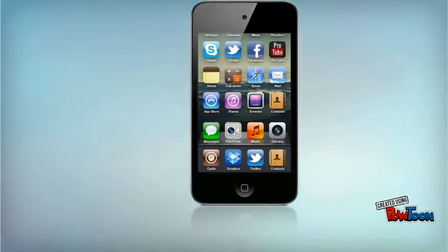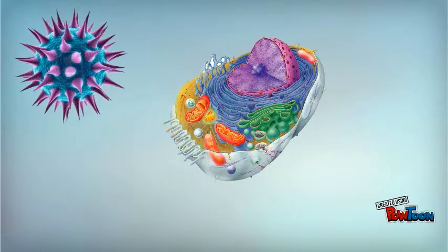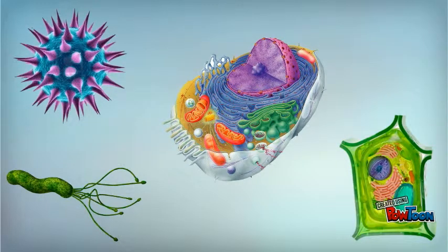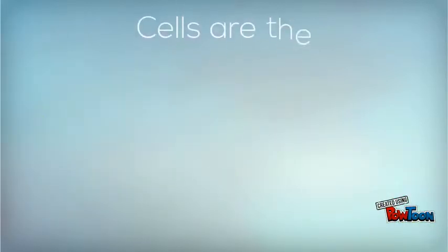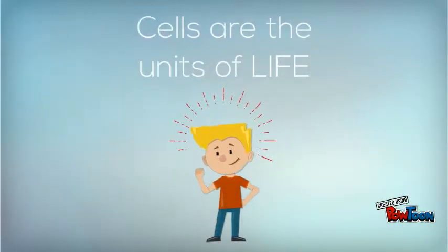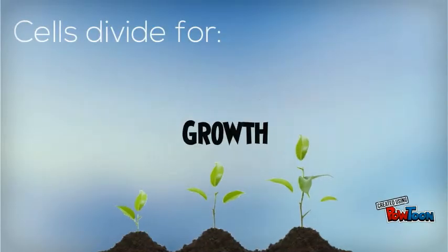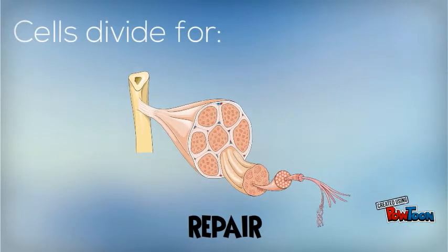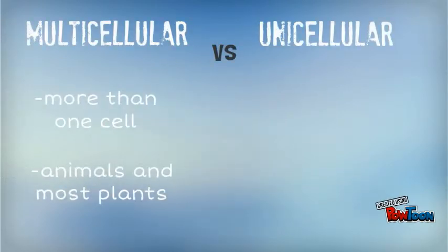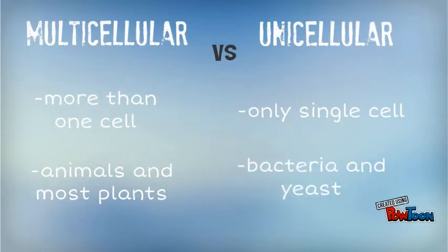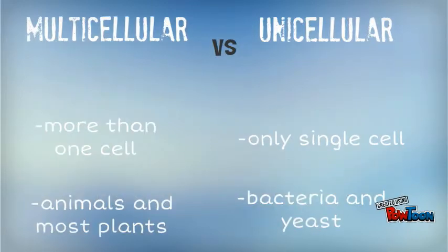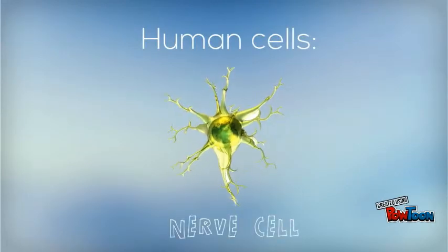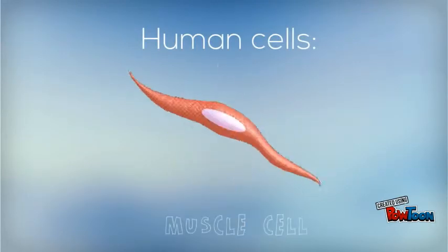Not this kind of cell, but more like this cell, this one, and the others. All living organisms are made up of cells. They are the basic building blocks of life. The cells divide so an organism can grow and repair areas of damage. Organisms made up of more than one cell are described as multicellular. Animals and most species of plants are multicellular. Some human cell types include nerve cells, bone cells, and muscle cells.